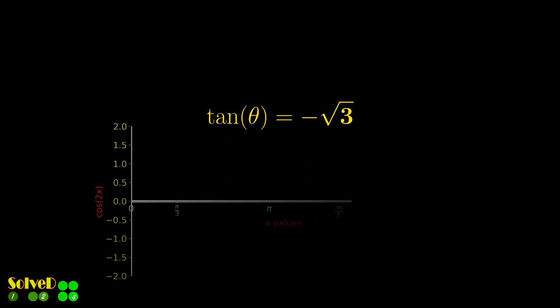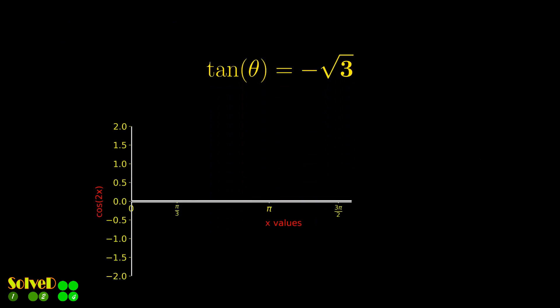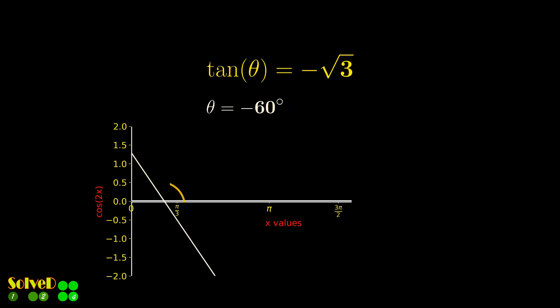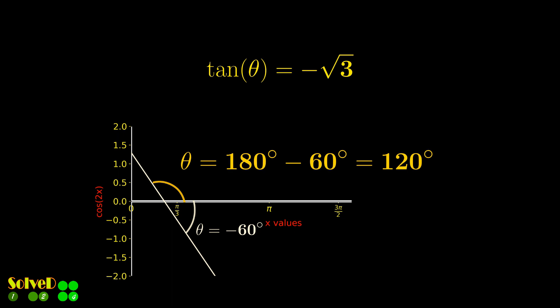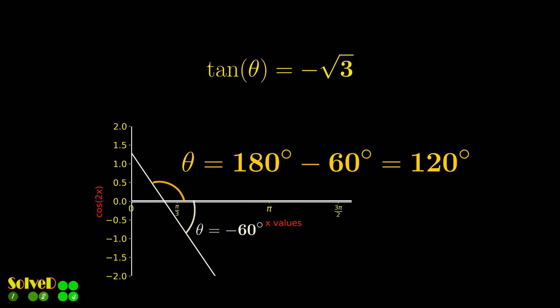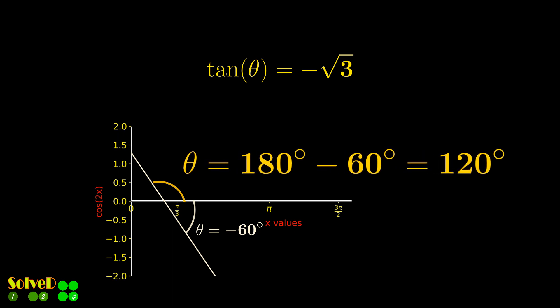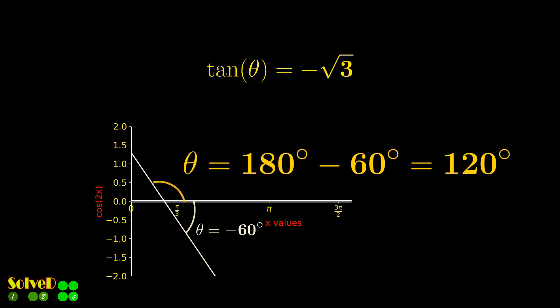Taking arctangent of minus square root of 3 gives an angle of minus 60 degrees. Finally, the angle of the line with the positive sense of the x-axis is obtained by subtracting this 60 degrees from 180 degrees, as shown in the graph.